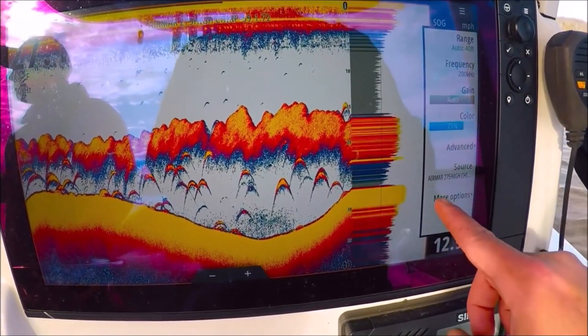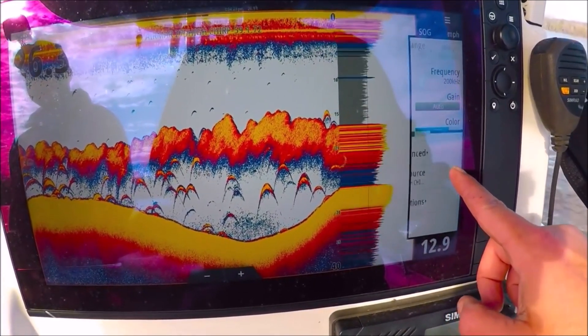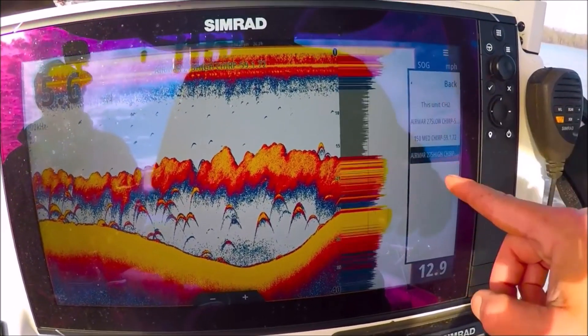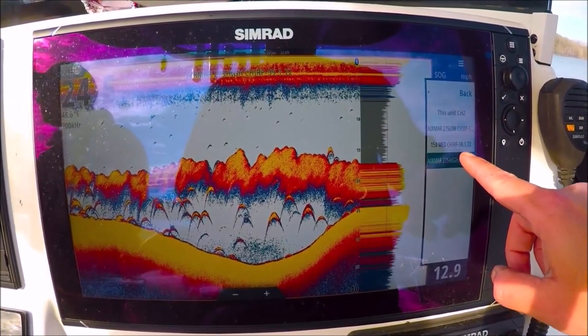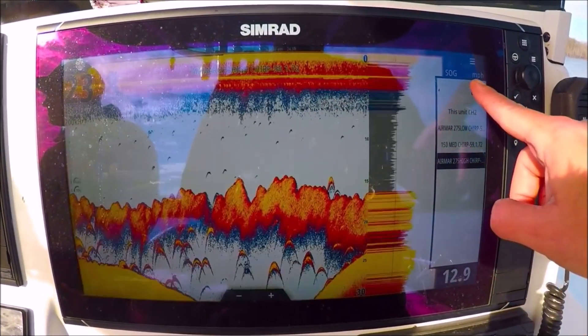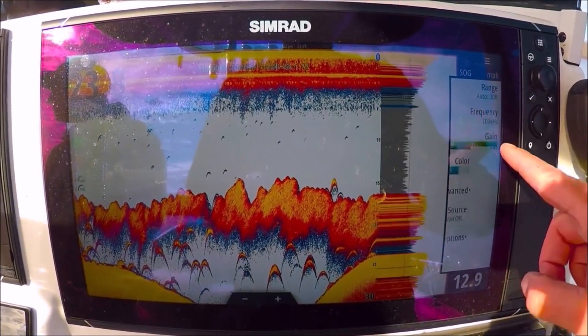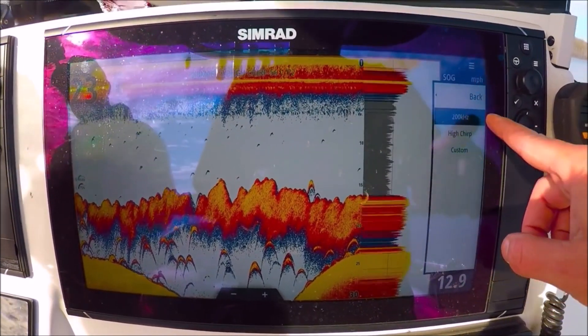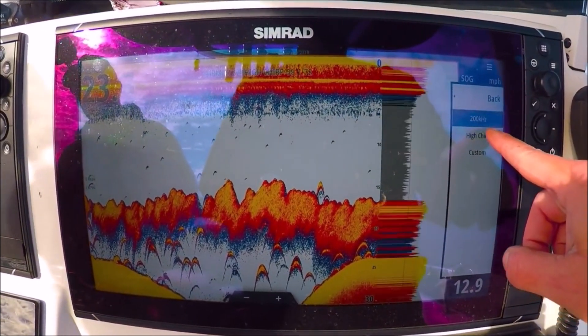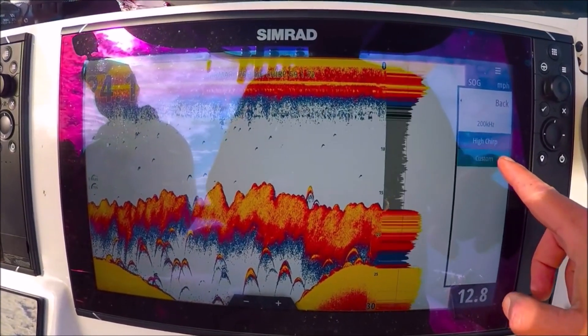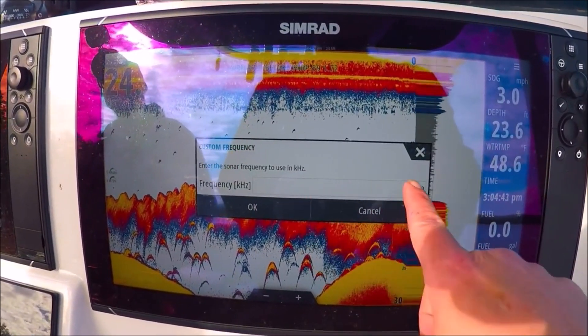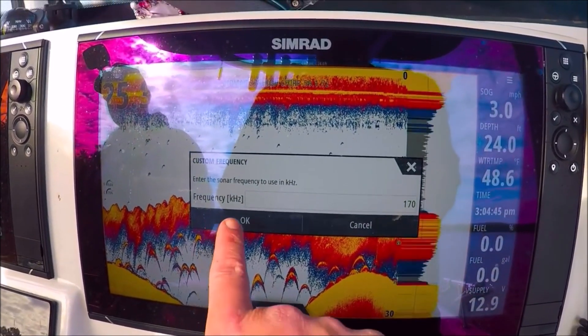Back. Source. We can pick the transducer we're using. I have several on this system. I have my high chirp transducer selected now. Now I can go into frequencies. This particular transducer is 200 kilohertz high chirp on this channel, or custom. Custom, we can pick the frequency we like. 170 is one I like. You can see what that looks like.